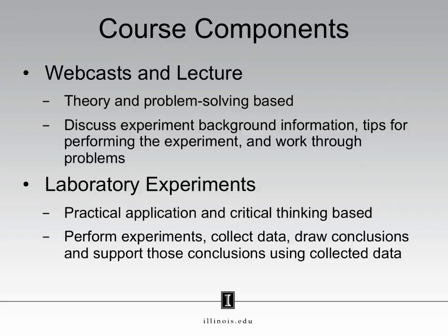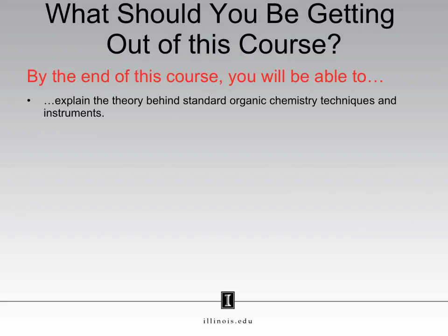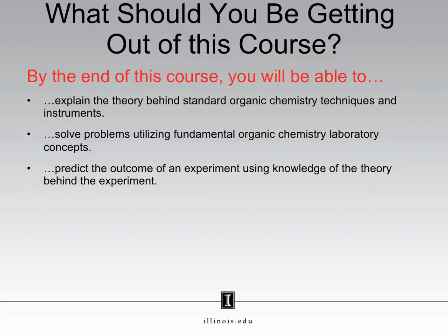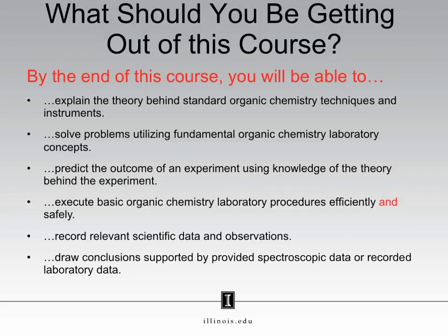After you've finished this course, what should you have gotten out of it? By the end of this course, you will be able to explain the theory behind standard organic chemistry techniques and instruments, solve problems utilizing fundamental organic chemistry laboratory concepts, predict the outcome of an experiment, execute basic laboratory procedures efficiently and safely, record relevant scientific data and observations, and draw conclusions supported by spectroscopic data or your own recorded laboratory data.